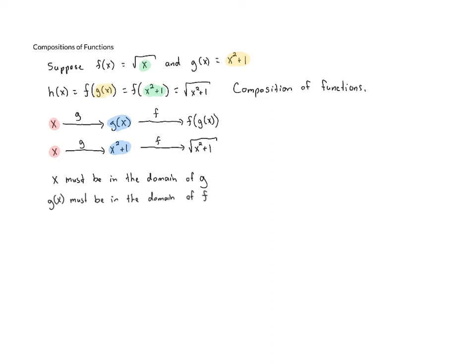Every time we look at a composition of functions, it's going to be important for us to look at the domains to make sure that everything works out. So let's look at the domains for this particular composition. x via g gets turned into x squared plus one, and then that goes into f and becomes the square root of x squared plus one. First, I want to look at the domain of g. The domain of g is all real numbers, because g of x equals x squared plus one — that's a polynomial. We don't have to worry about zero in the denominator or a negative number under the radical. g of x is defined for all real numbers, so we can input any number x into g.